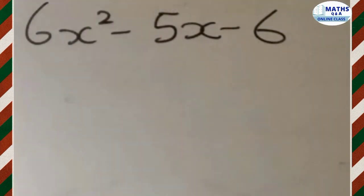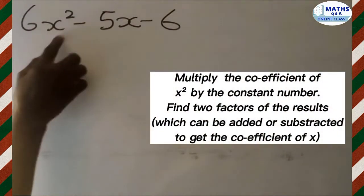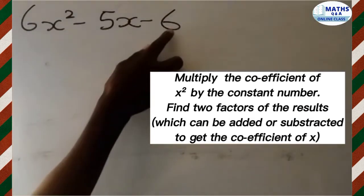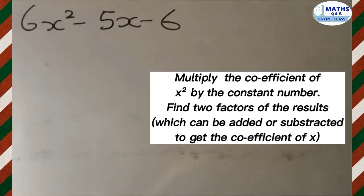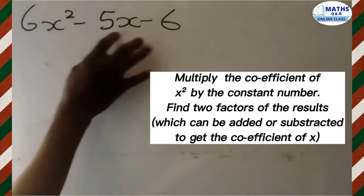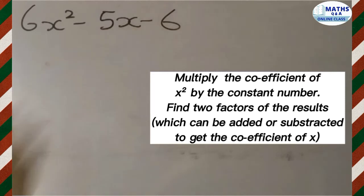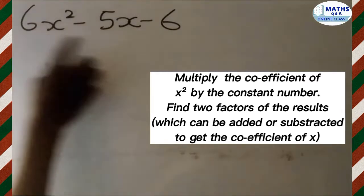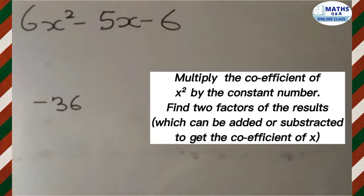Let me repeat. To get 4 terms, we multiply the coefficient of x squared, which is 6, by the constant number, which is negative 6. The result we will get — we will find 2 factors from that result which can be added or subtracted to get the coefficient of x, that is negative 5. So now let's do that: 6 multiplied by negative 6 gives us negative 36.